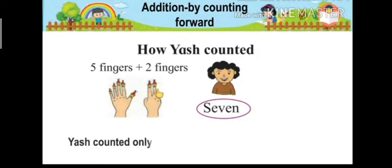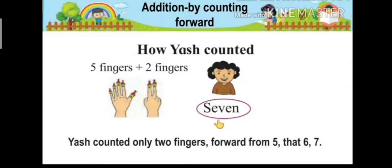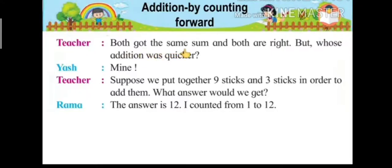Yash counted only two fingers forward from five, that is six and seven. Yash got the answer seven. Teacher says that both got the same sum and both are right. But whose addition was quicker? Both answers are the same and right. Yash counted only two fingers after five: six and seven.